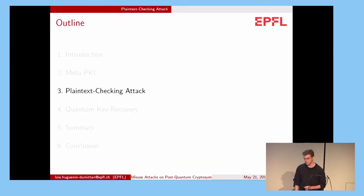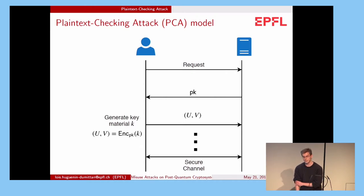Now let's consider the model we consider for attacks. This is a real-life setting where a client wants to communicate securely with a server. If the client is honest, he can request the public key from the server. He can generate some key material K, encrypt the key material which results in two ciphertexts U and V, and send U and V to the server that decrypts. And after some steps, they can derive some symmetric key and establish a secure channel.